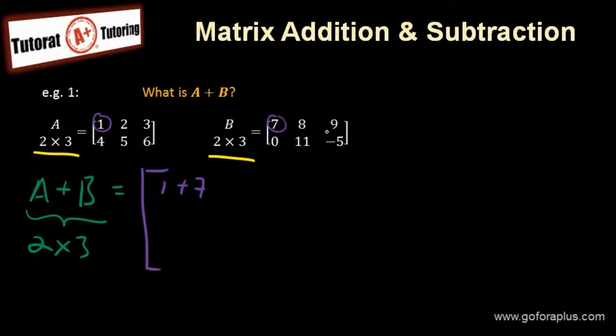And 2 plus 8, and 3 plus 9. And then you have 4 plus 0, 5 plus 11, and 6 plus minus 5.